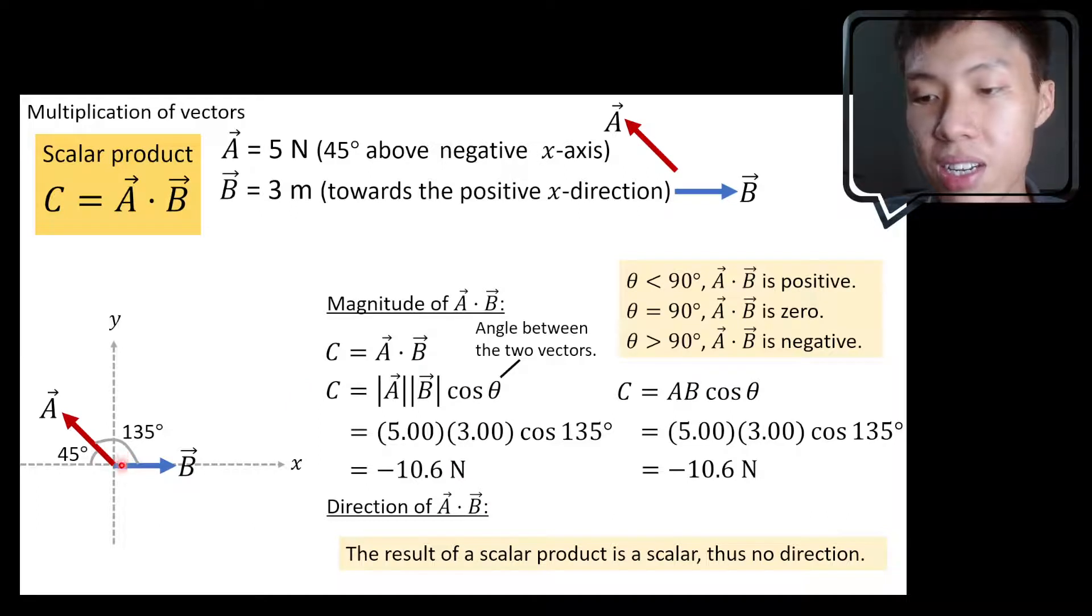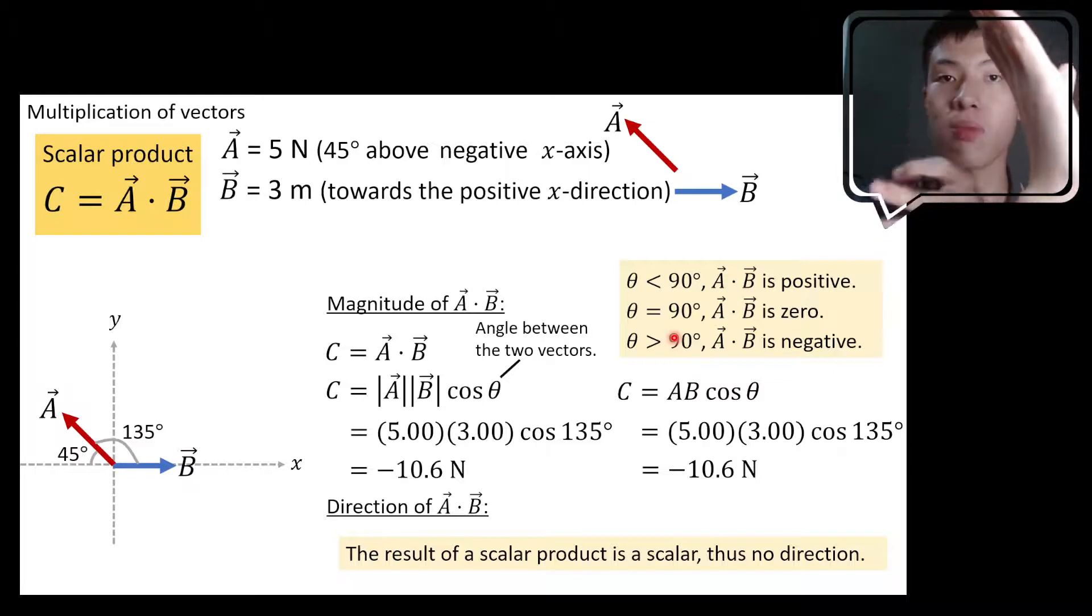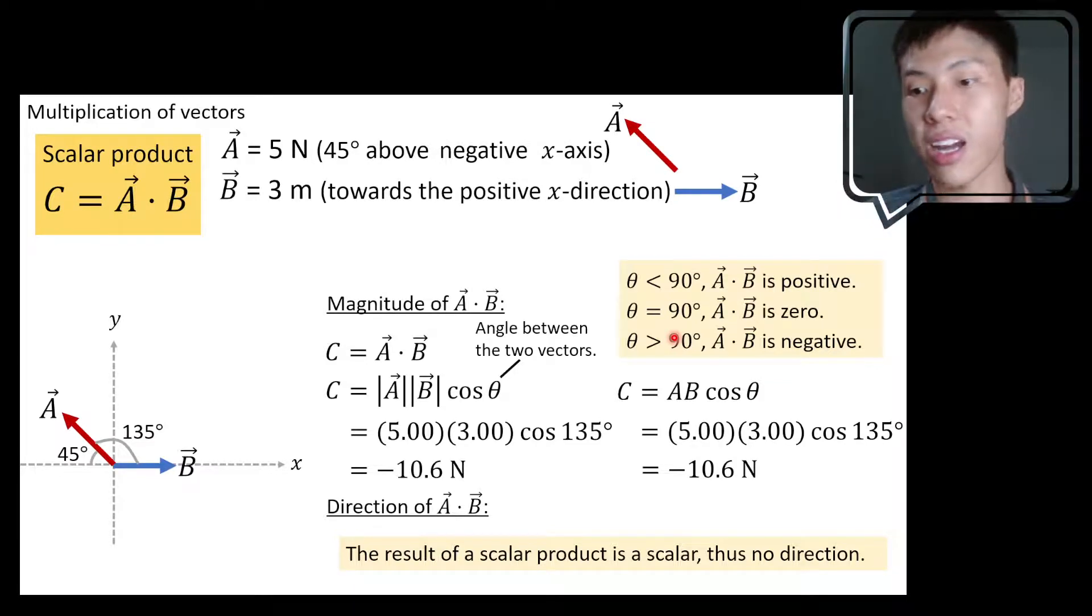If the θ is 90 degree, they are perpendicular to each other, no parallelness at all, then A·B will be zero. And if the θ is greater than 90 degree, the component will be solved in the opposite direction. You can see that the component will be in the opposite direction.